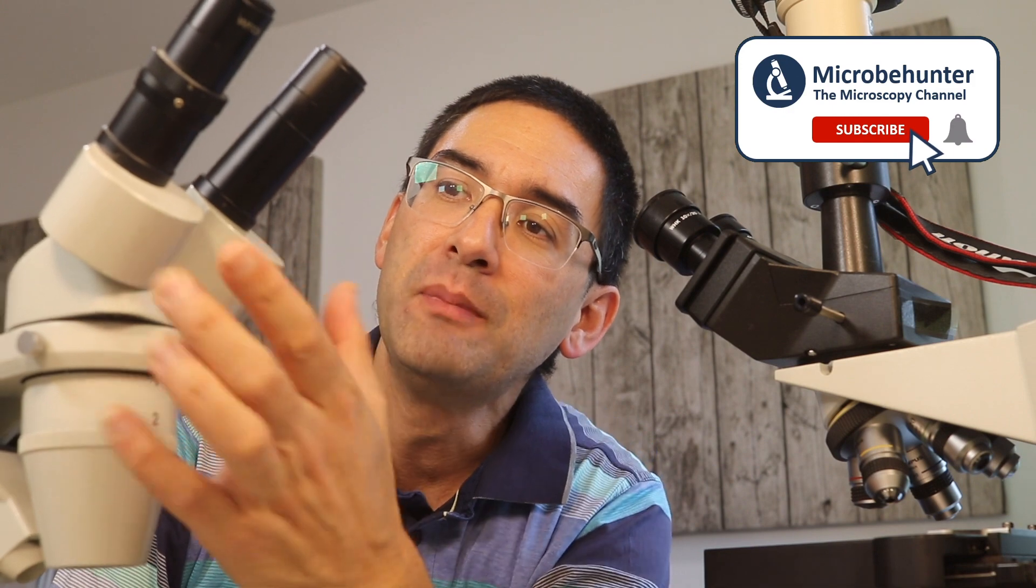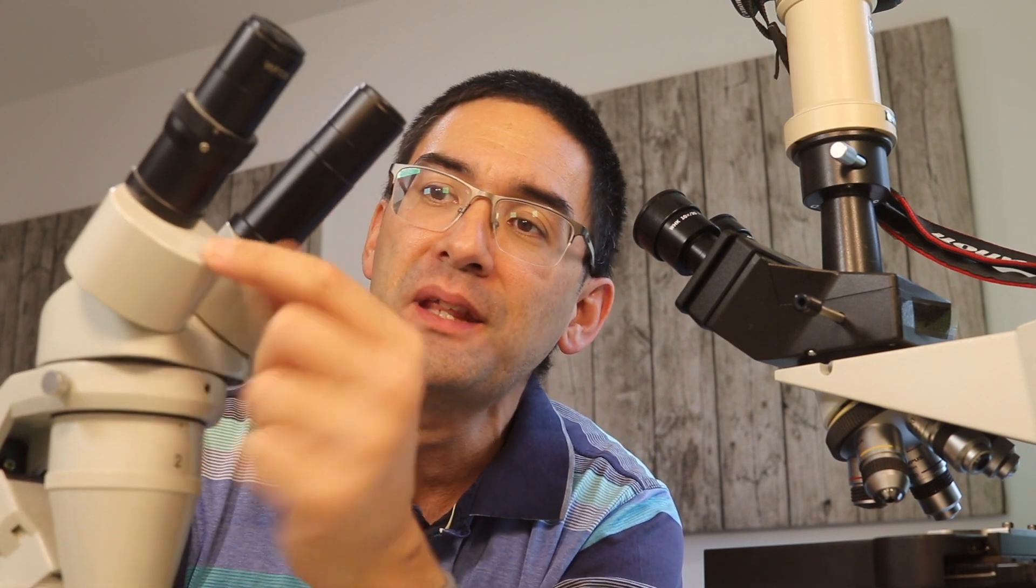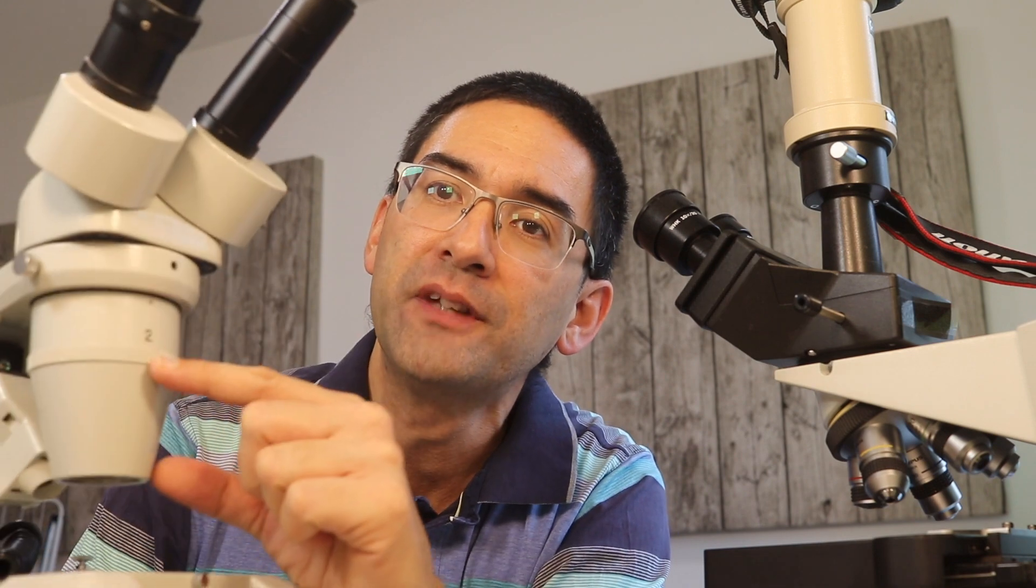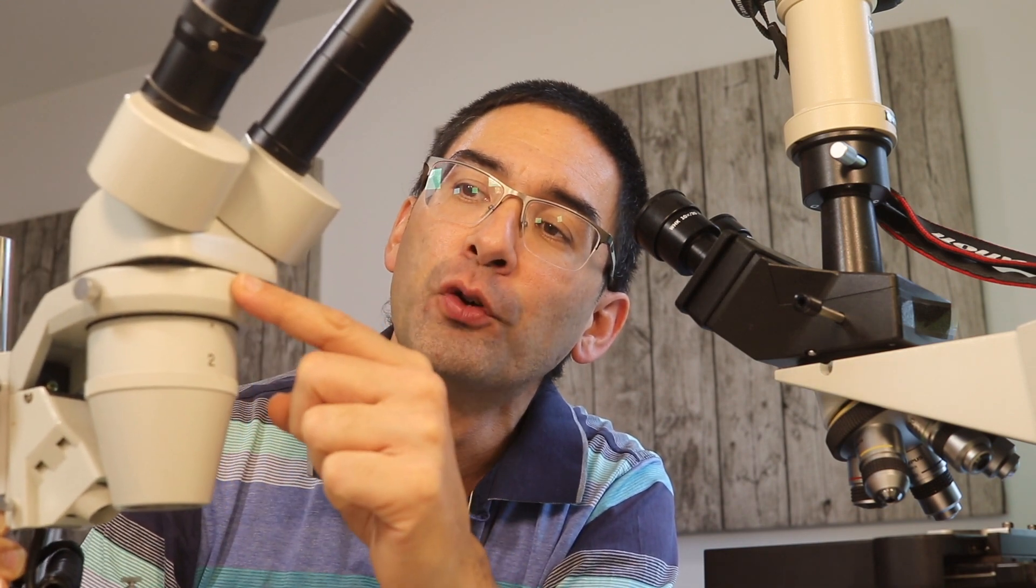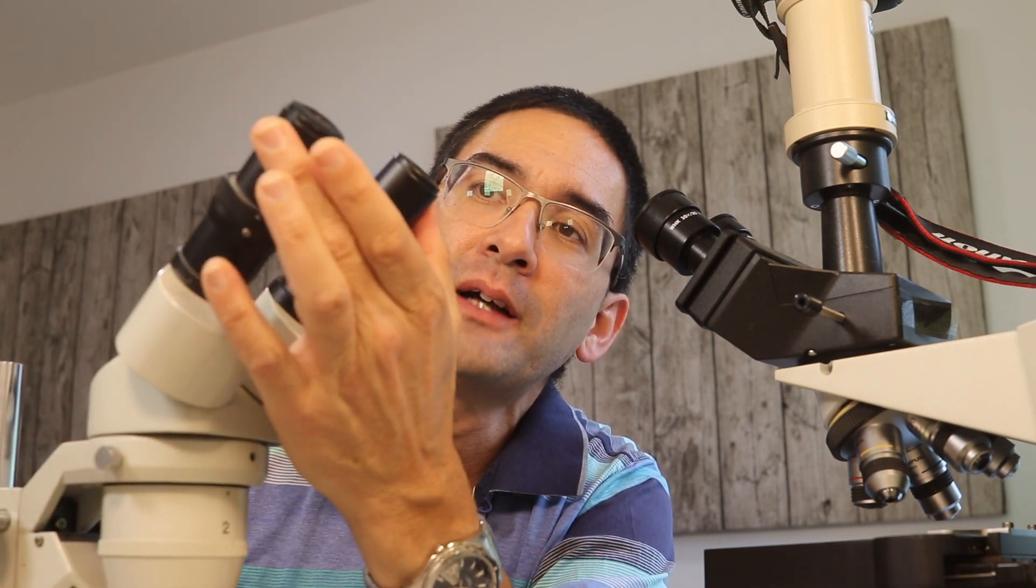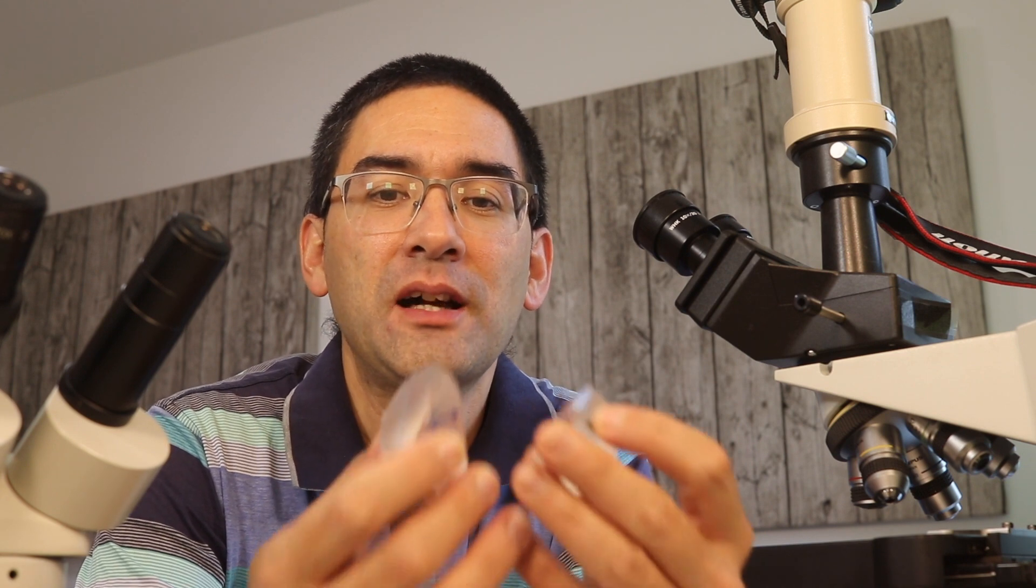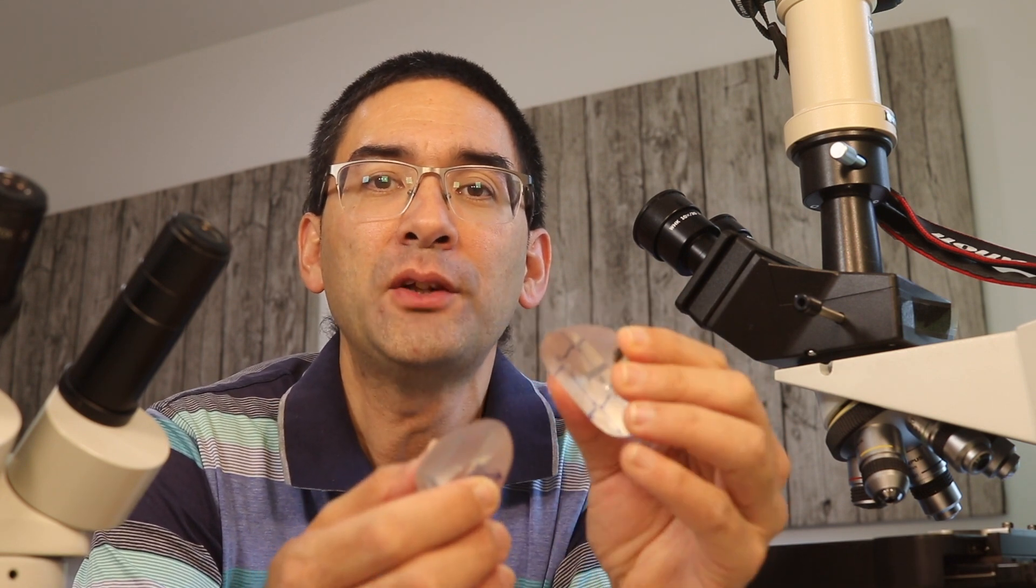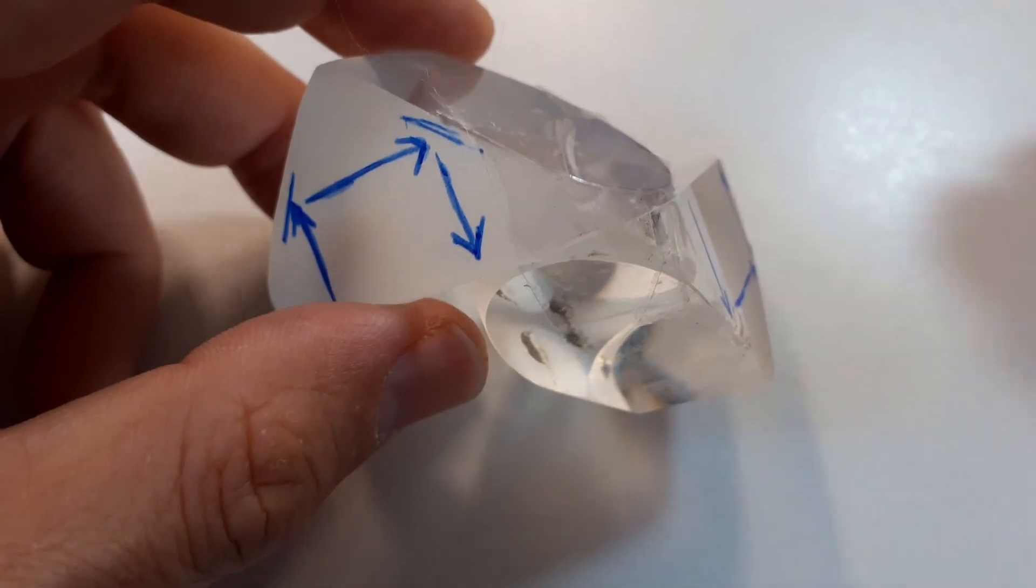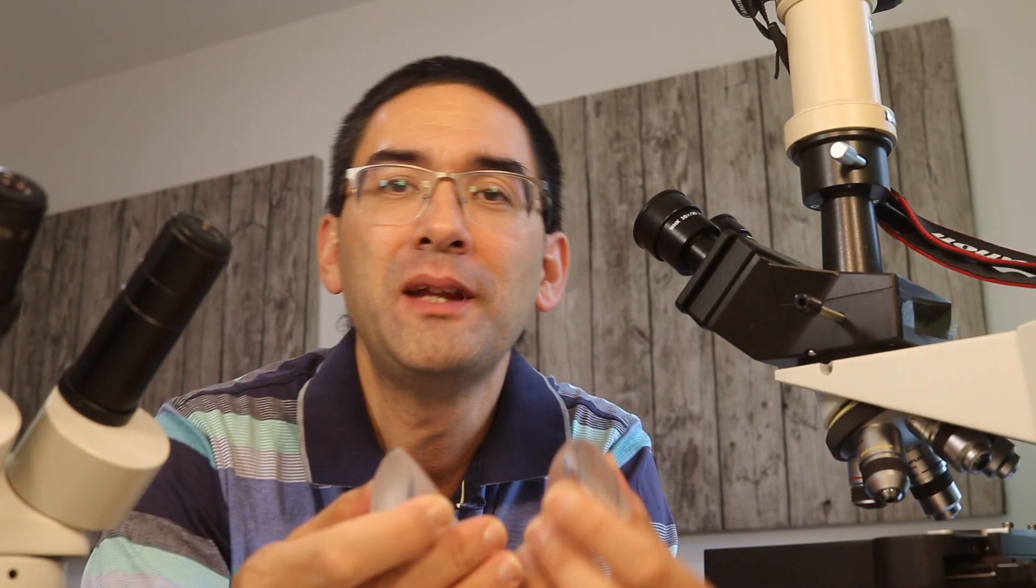And the reason is because in here you have an optical system prisms that flip the image around. So the objective down here produces an inverted image which is then flipped around here upright and then it's further magnified by the eyepieces. And the question that I want to answer in this video is why do they use prisms and why don't they use mirrors?